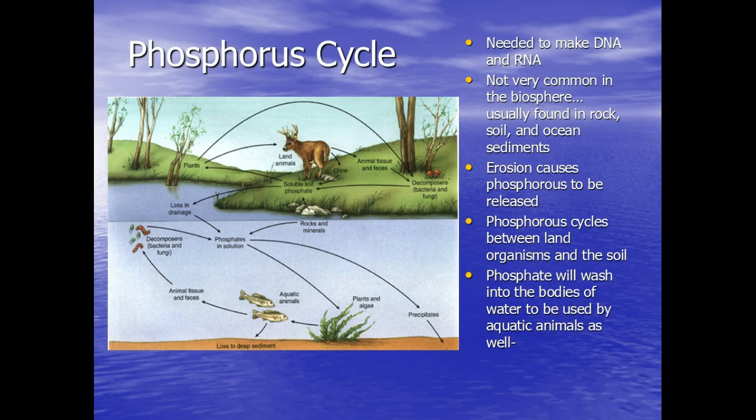Erosion causes phosphorus to be released. So think of heavy rains coming down on rock. Over time, the rock is going to be broken down in a process called erosion.